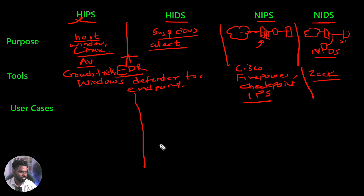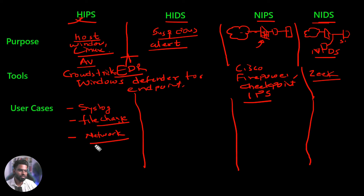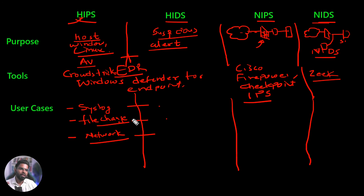Host-based IPS is useful to monitor syslog alerts of your Windows or Linux machine and look at file changes. If there's any unauthorized file change, it can detect and prevent it — this is also called file integrity monitoring. It can also look at network traffic and if it is going to a malicious site, it will stop the connection. Whereas with HIDS you only get visibility of all the things happening — syslog visibility, file change alerts, network visibility, file system, memory, and registry changes on the machine. When you combine both, you get visibility and can also take action.